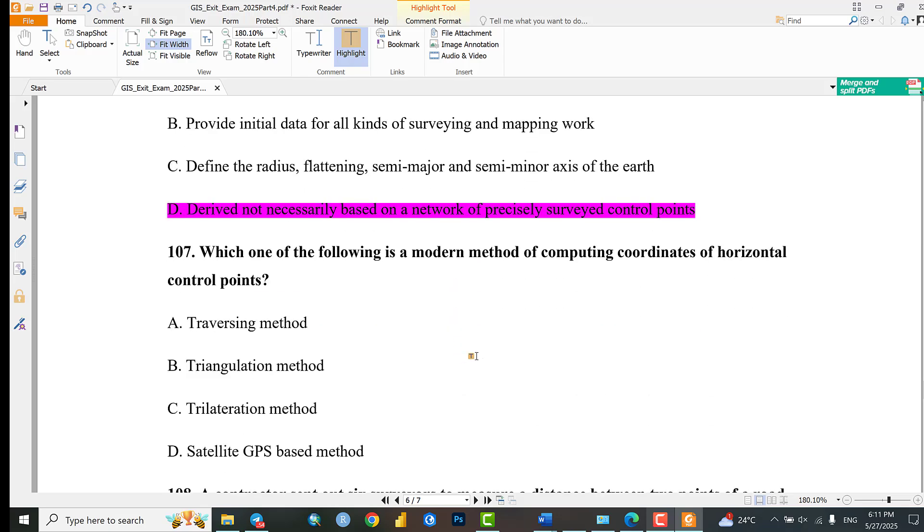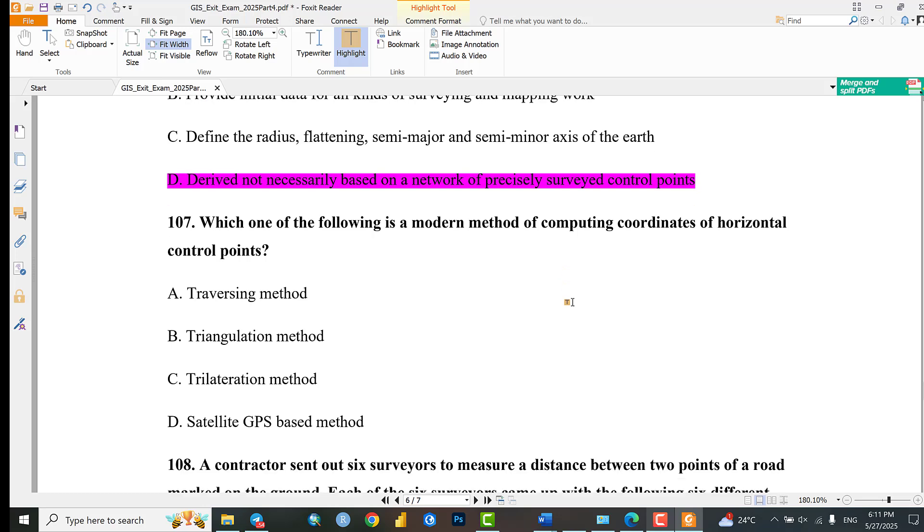Question 107: Which of the following is a modern method of computing coordinates for surveys and control points? Traversing method, triangulation method, trilateration method, or satellite GPS-based method? The answer is satellite GPS method.